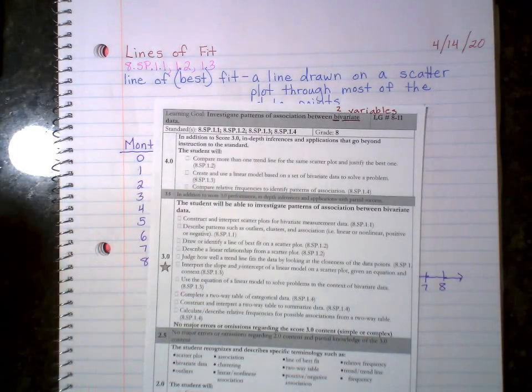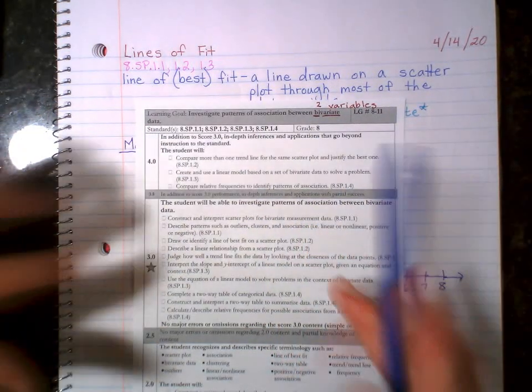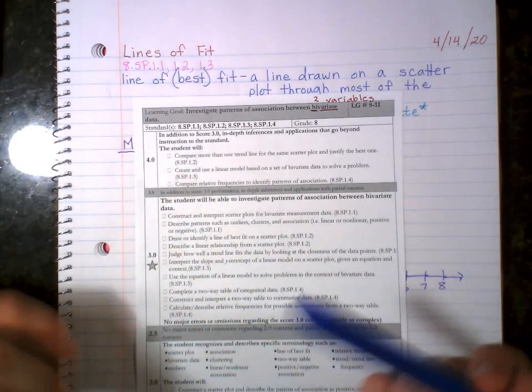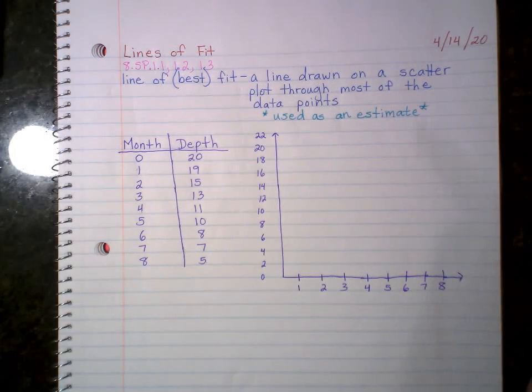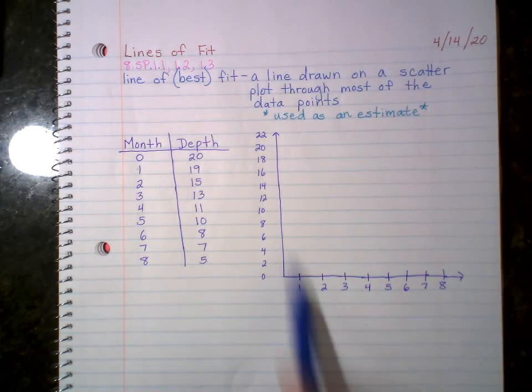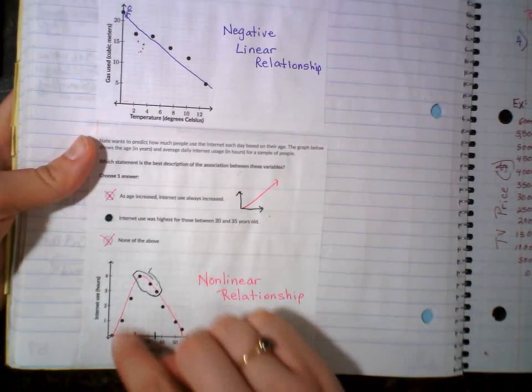All right, so what we are doing for the learning goal, we're still investigating patterns of association between bivariate data. In your own words, what does that mean? Investigate, you're analyzing. You're Nancy Drew, okay? You're going on a mission. Patterns of association, relationships between data that shows two variables, x and y chart, x and y table, x and y axis, two different variables. So if you watched yesterday's video on scatter plots, we talked a little bit actually about the lines of fit.